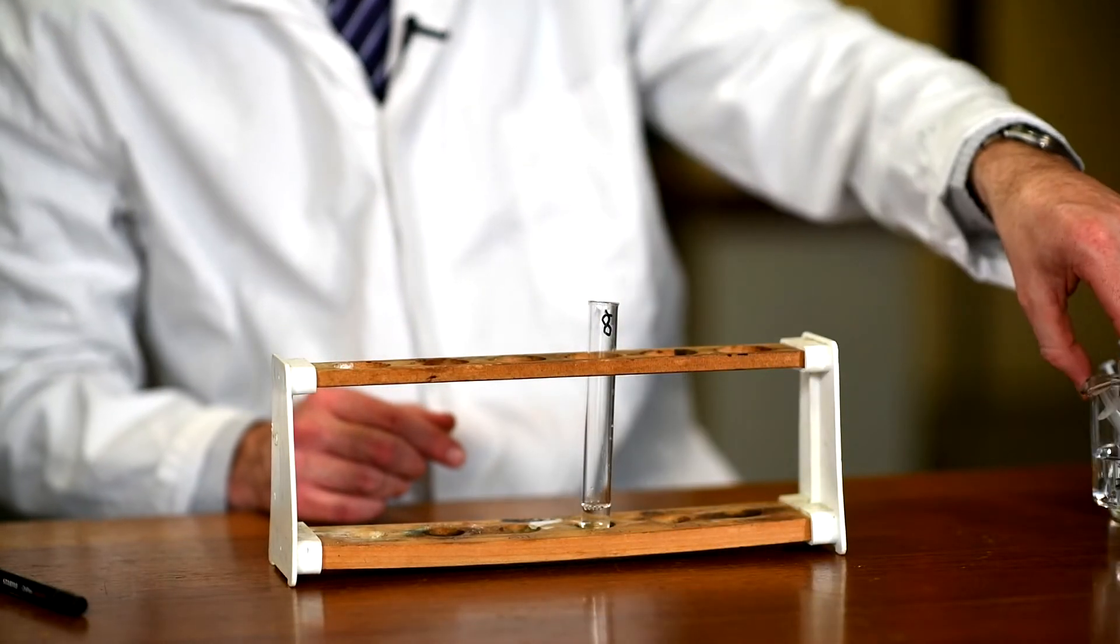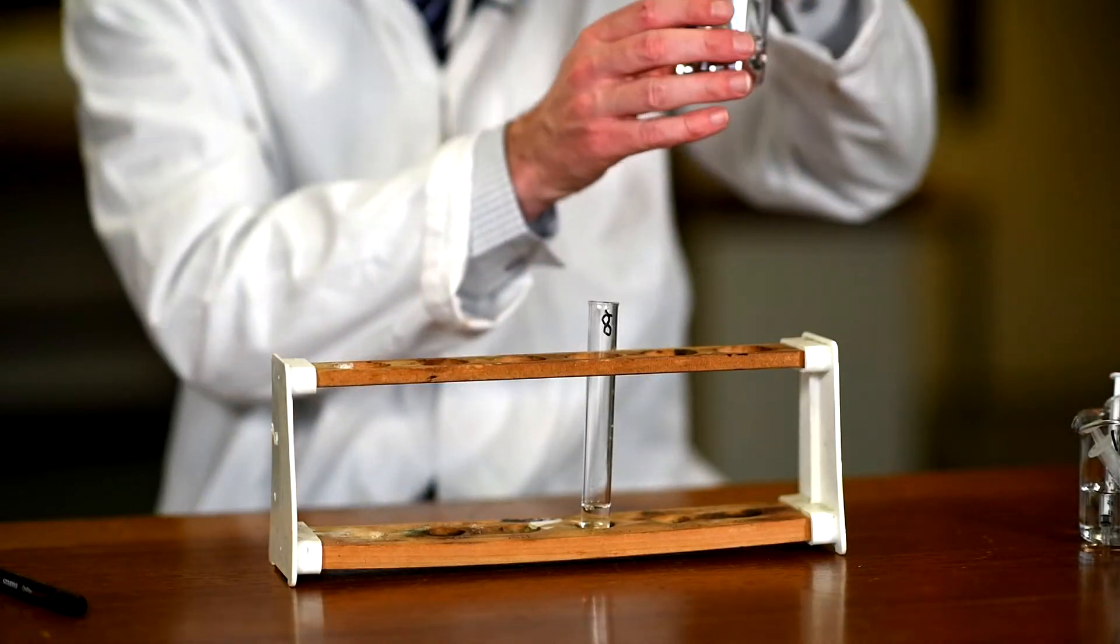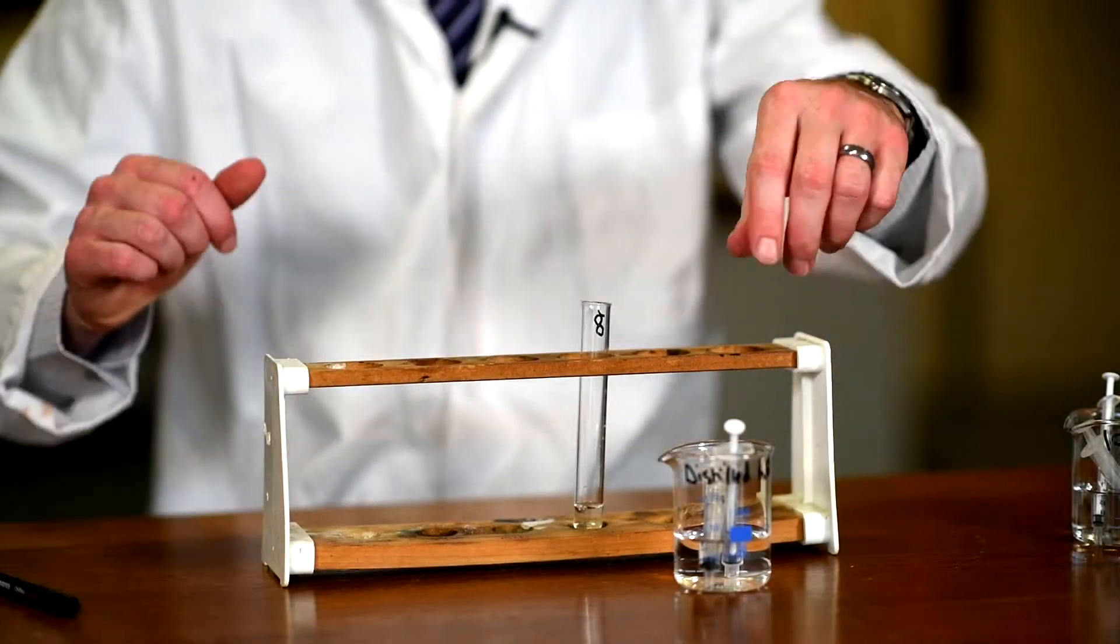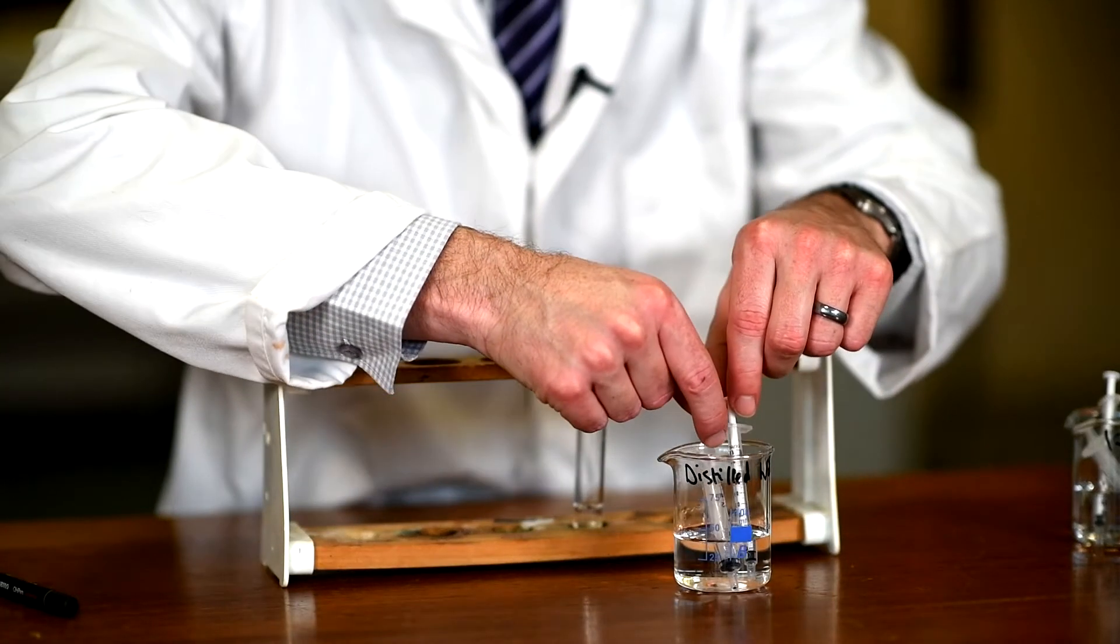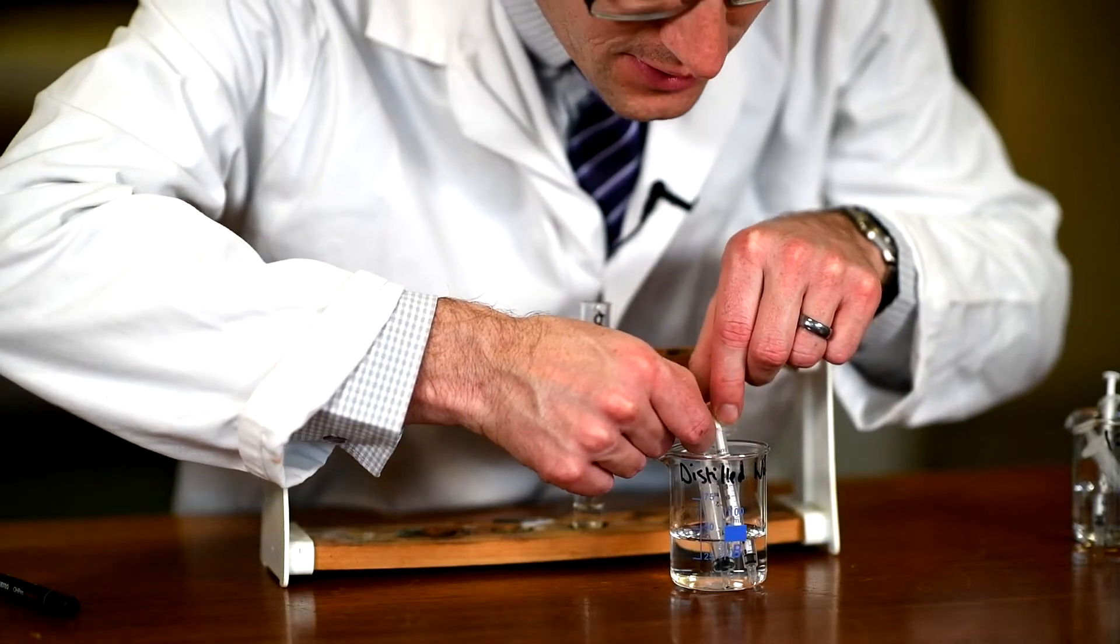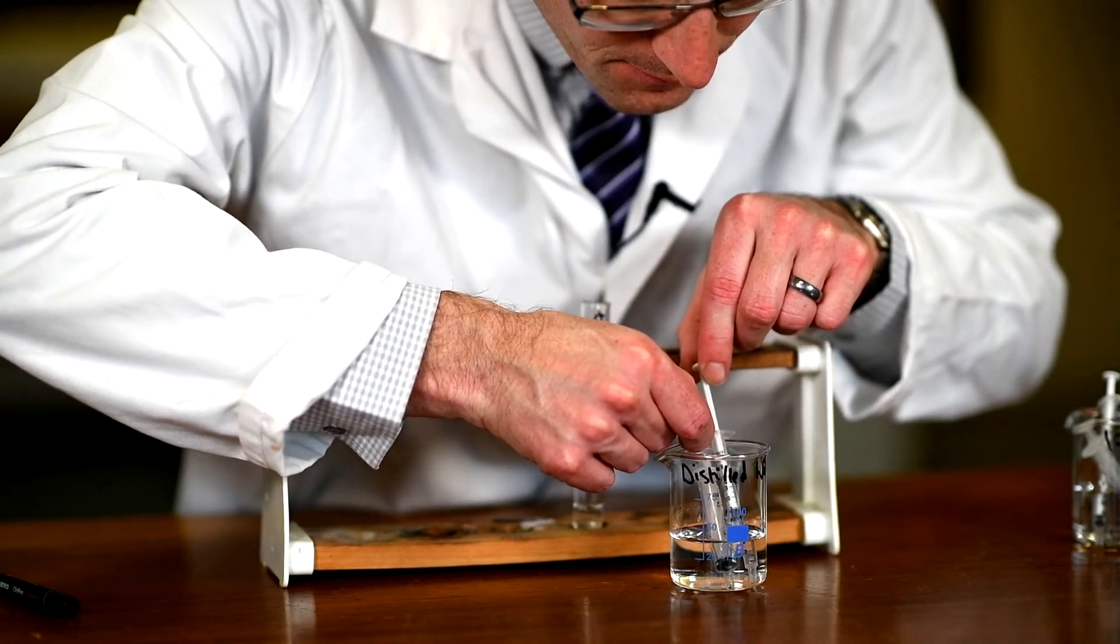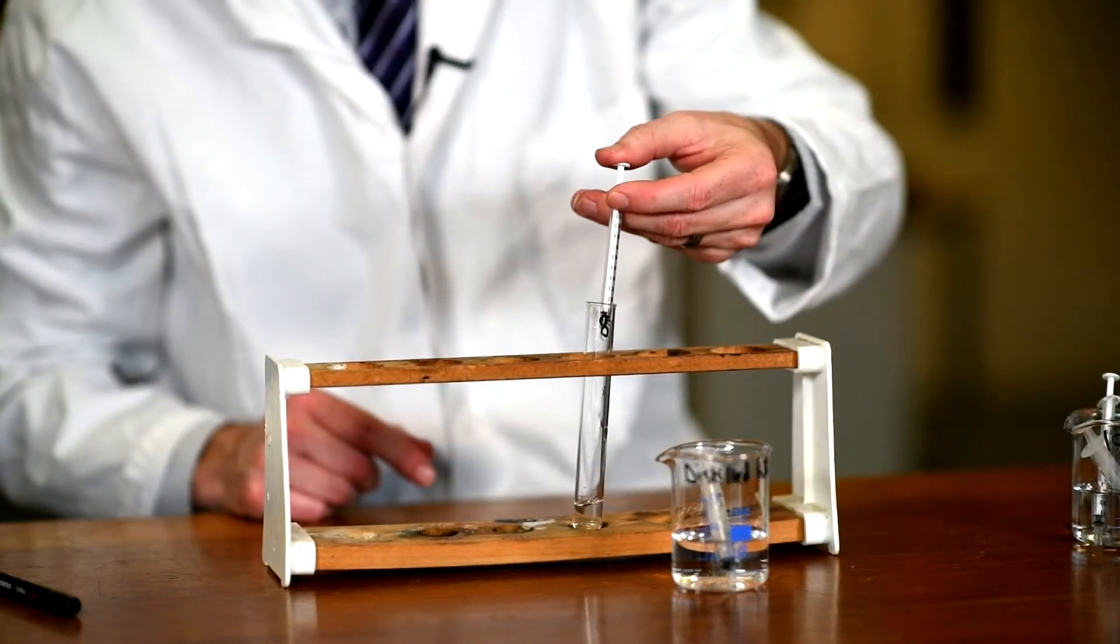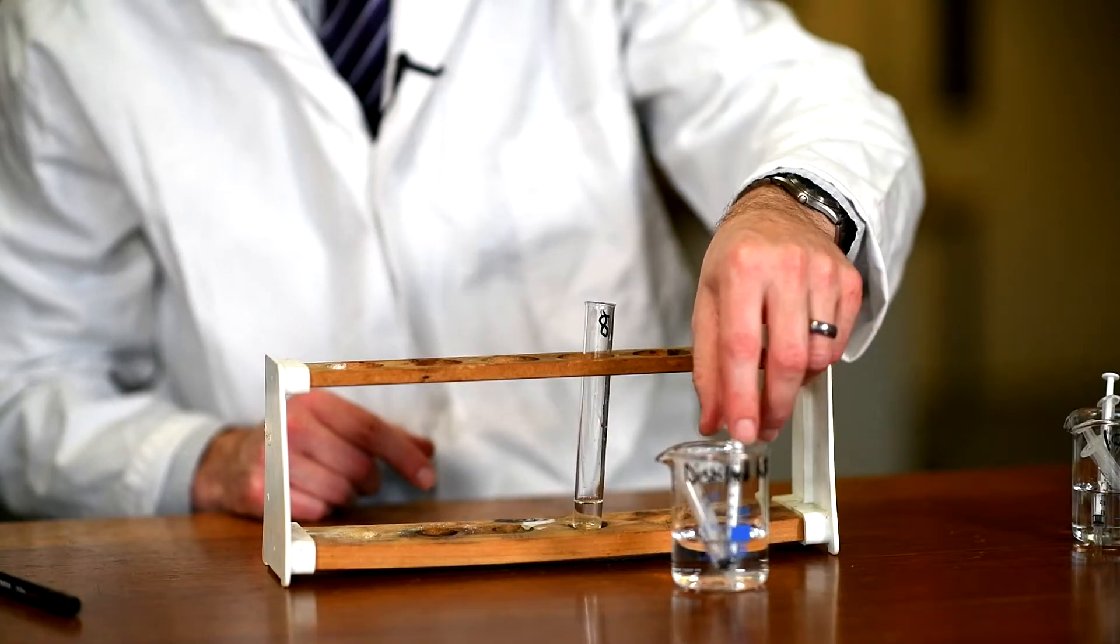We now need to dilute the glucose with some distilled water. So I have a beaker of distilled water here. Again, I've got two syringes, a two milliliter syringe and a one milliliter syringe. This time I'm going to use a one milliliter syringe to carefully measure up 0.4 milliliters of distilled water, making a total volume of two milliliters.